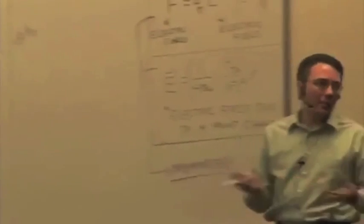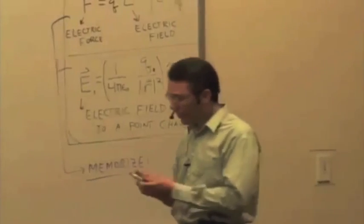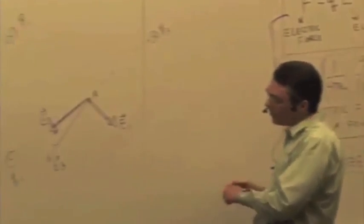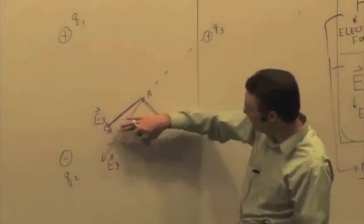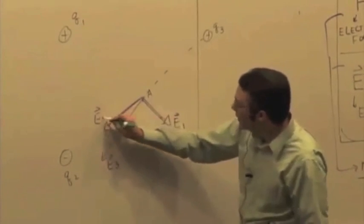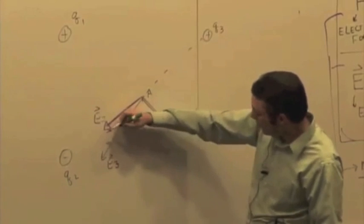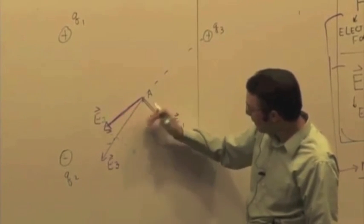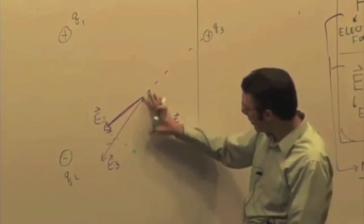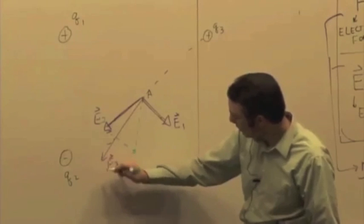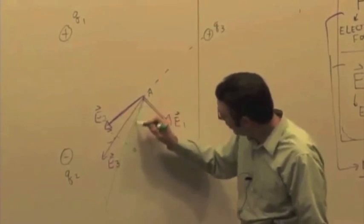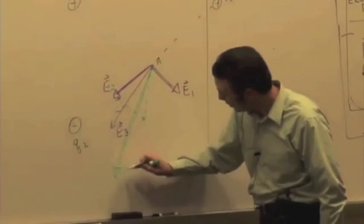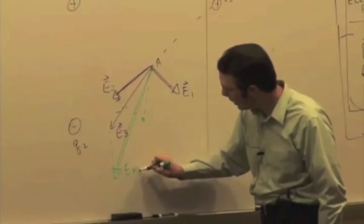And last step is just to add them up, add up the vectors. So graphically, if I added these vectors together, E1 plus E2 would be something like that and then add those together would give me something like that. So the net electric field due to all three of those charges would be something like that, in that direction.